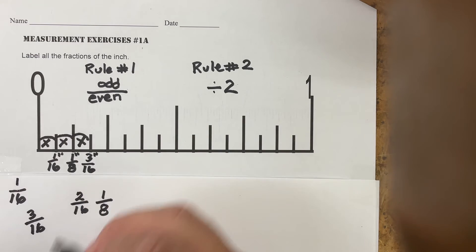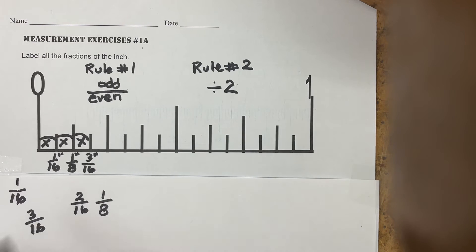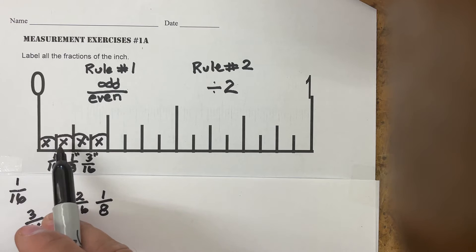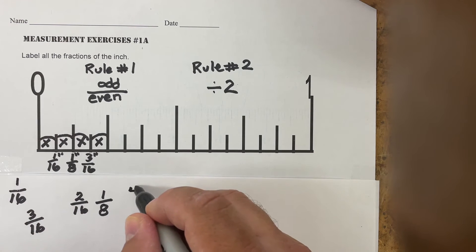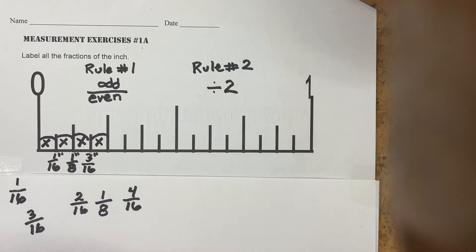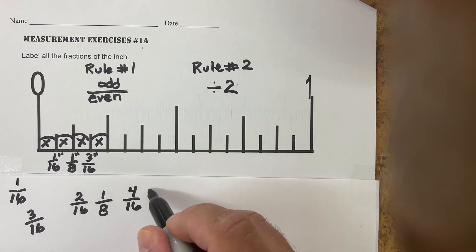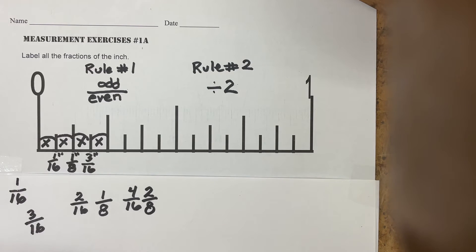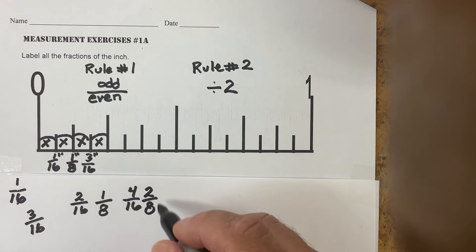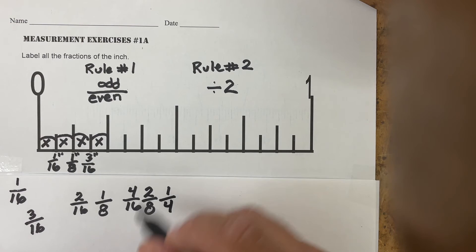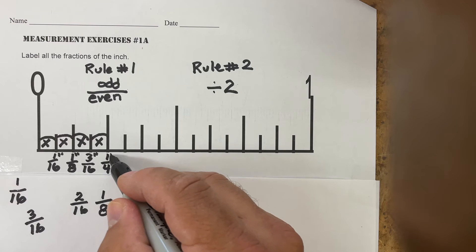The next increment is four out of 16. Four over 16 is not odd over even, so we apply rule two and divide by two: two goes into four twice, two goes into 16 eight times — that gives us two over eight. Still not odd over even, so divide again: two goes into two once, two goes into eight four times. That gives us one-fourth of an inch.